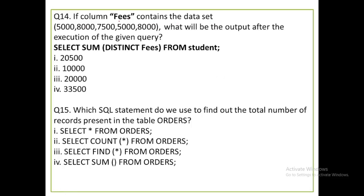If column FEES contains the dataset 5000, 8000, 7500, 5000, 8000, what will be the output after executing SELECT SUM(DISTINCT fees)? The DISTINCT keyword removes duplicate values. So 5000 appears twice and 8000 appears twice — duplicates are removed. You add the distinct values: 7500 + 5000 + 8000 = 20,500. The first option, 20,500, is correct.